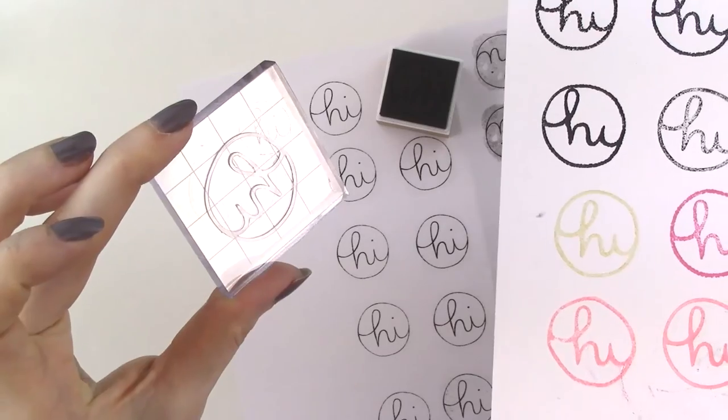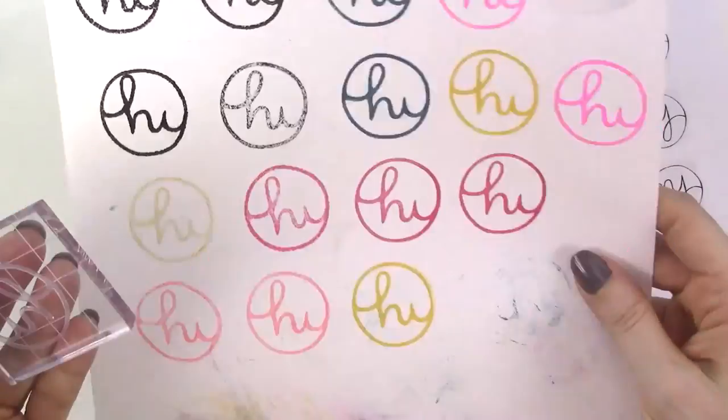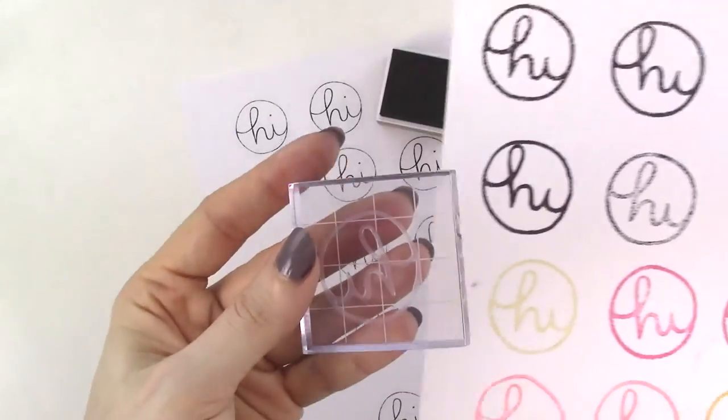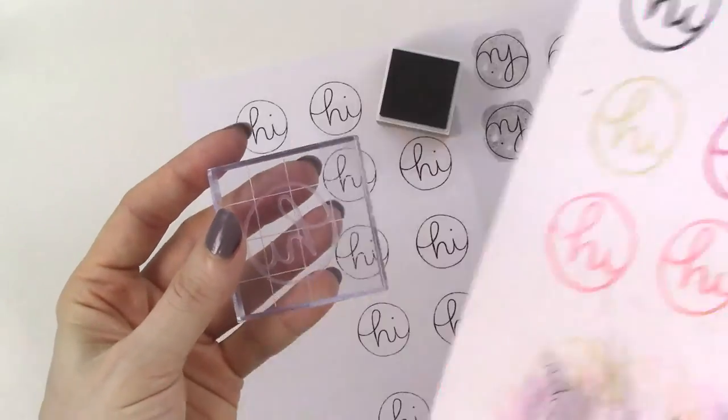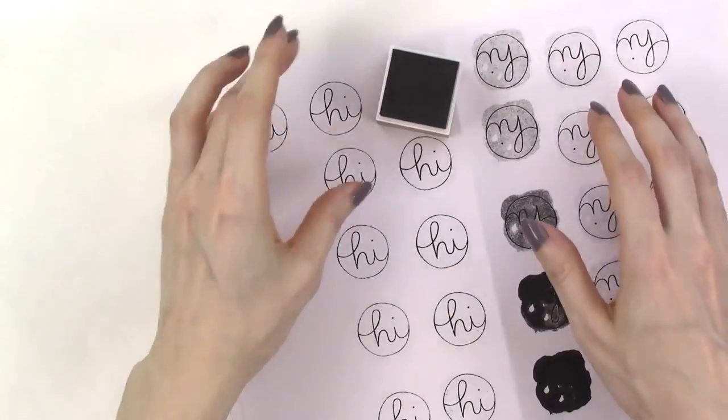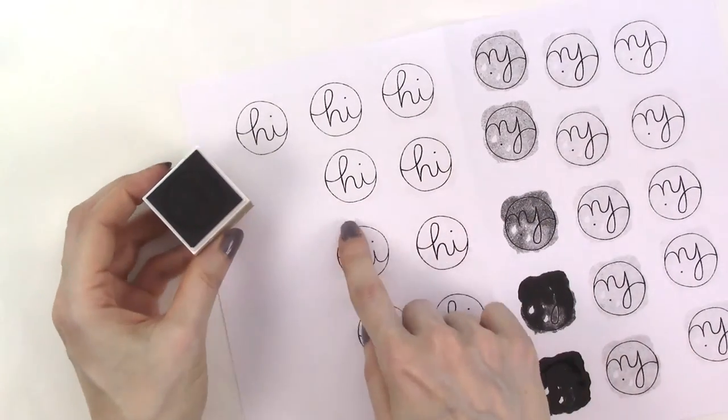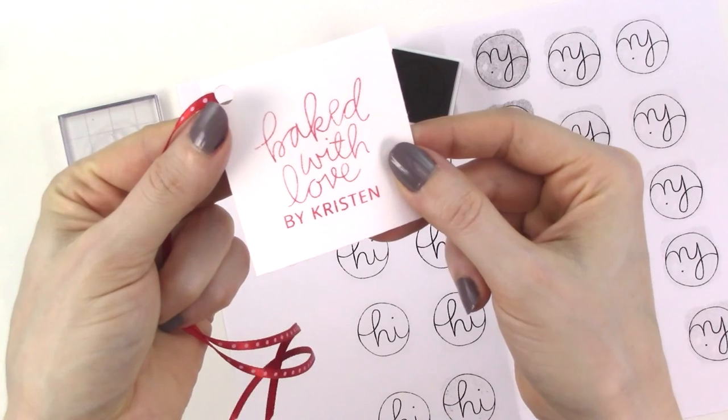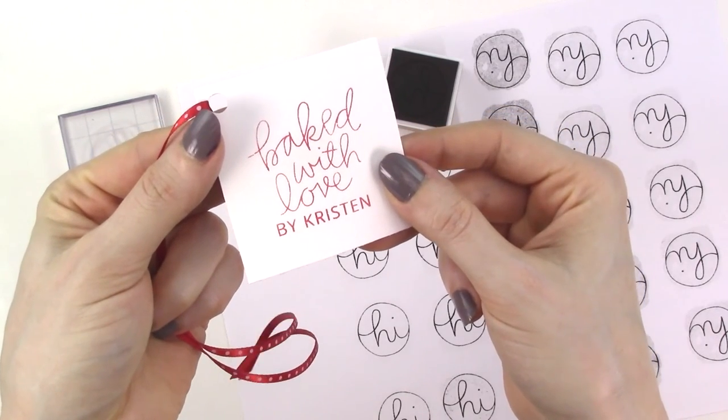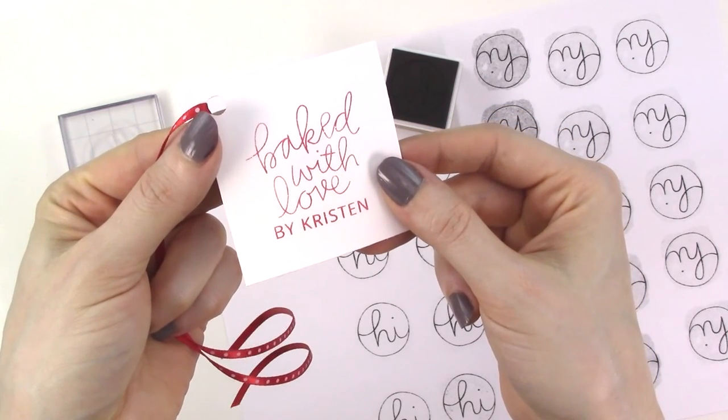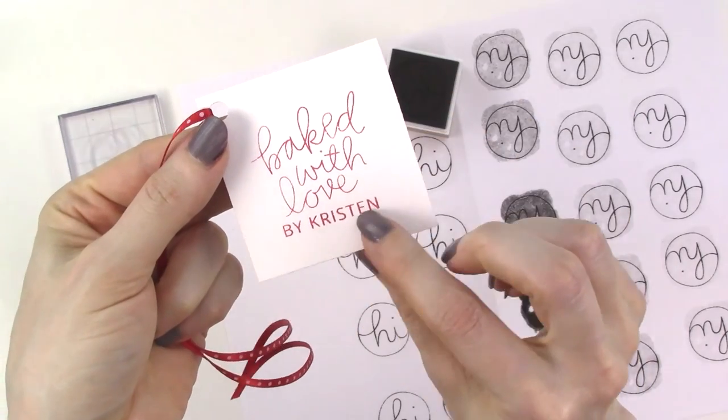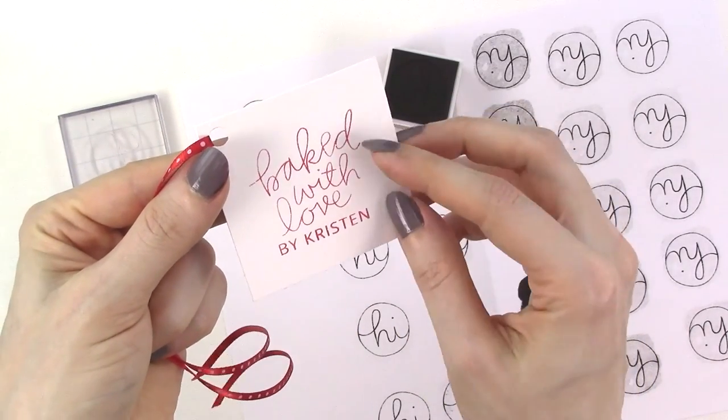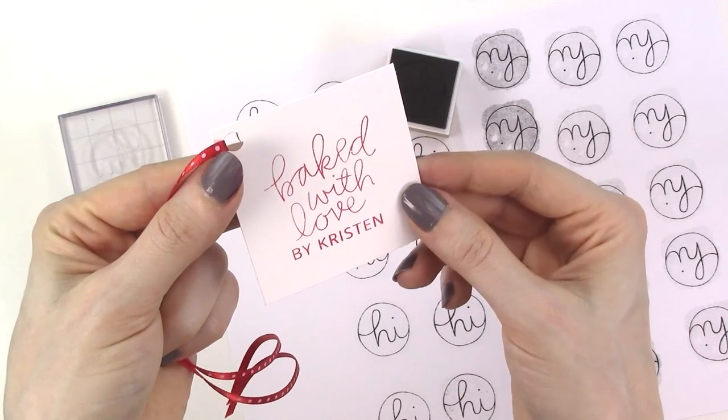One of the biggest differences between the Silhouette Mint and the Silhouette stamp material is the type of image that will work. With the stamp material you're limited to somewhat simpler images and images with thicker lines while with the mint you can easily create stamps with fine detailed line work and elements that are detached from each other. You can also design personalized and photo stamps with the mint and while you can cut letters and names with the stamp material you don't have the flexibility with size and line weight that you do with the mint.